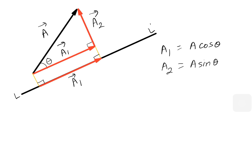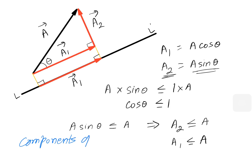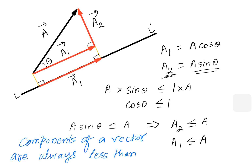Now we know that sin theta and cos theta are both less than or equal to 1. So if we multiply A, then A sin theta will be less than or equal to A — meaning A2 is less than or equal to A. Similarly, A1 is also less than or equal to A. So the components of a vector are always less than or equal to the original vector.